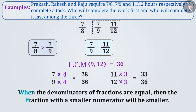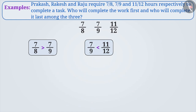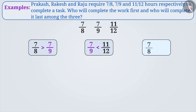The denominators of both the fractions are now equal. When the denominators of the fractions are equal, the fraction with the smaller numerator is smaller. Since the numerator 28 of 28 by 36 is smaller than the numerator 33 of 33 by 36, the fraction 28 by 36 is smaller than 33 by 36. Thus, we can say that the fraction 7 by 9 is smaller than 11 by 12. Since 7 by 9 is smaller than 7 by 8 and 11 by 12, this is the smallest fraction.